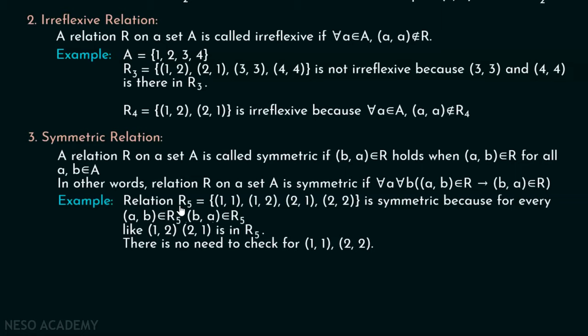Let's consider one example. We have relation R5 on set A = {1, 2, 3, 4} with ordered pairs: (1,1), (1,2), (2,1), (2,2). This relation is symmetric because for (1,2) we have (2,1), and there is no need to check (1,1) and (2,2). For every (A, B) belonging to R5, (B, A) also belongs to R5. Here we have (1,2), and (2,1) is there in R5.